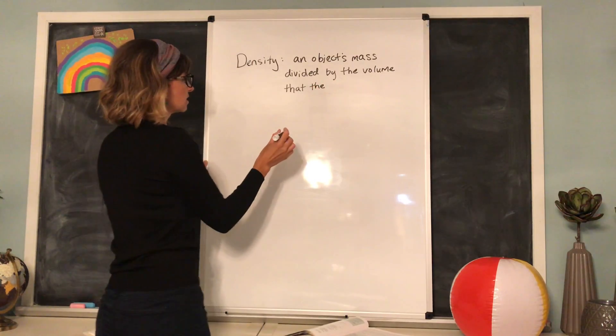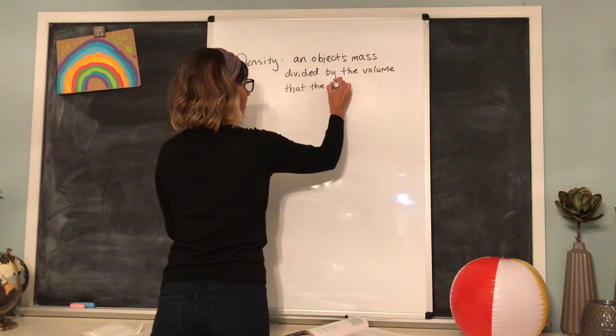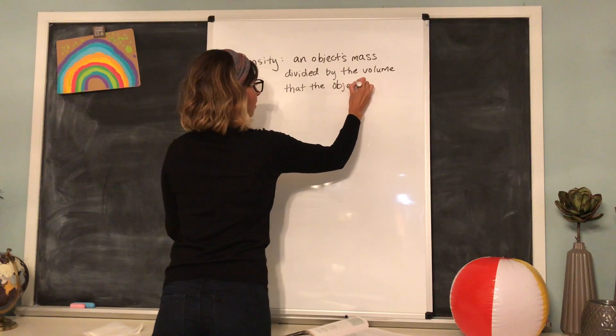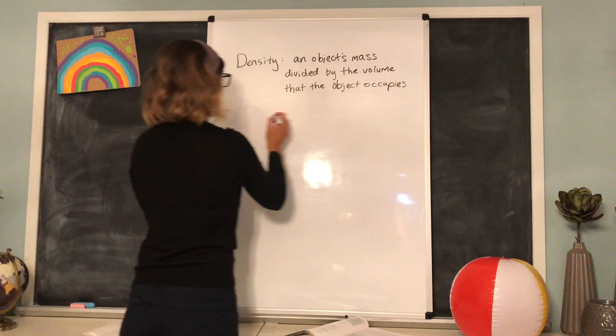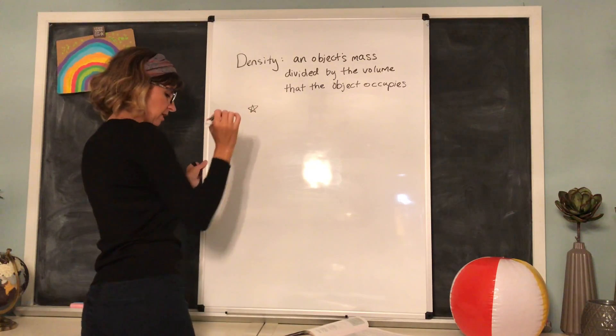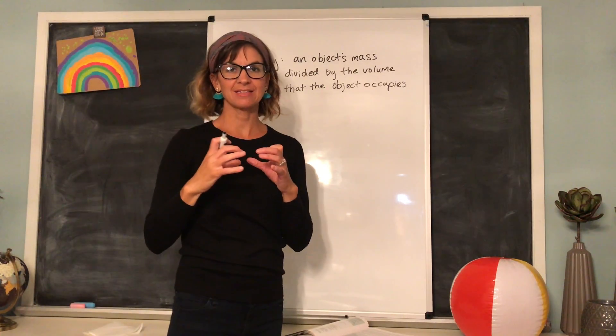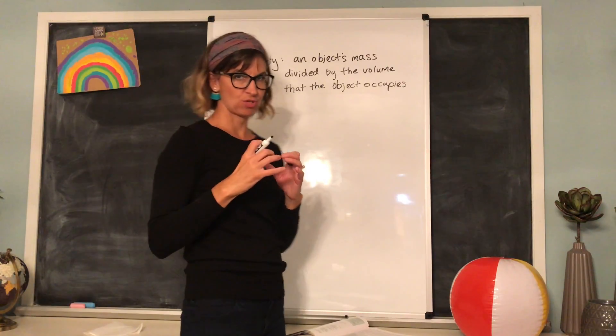Density is an object's mass divided by the volume that the object occupies. In other words, density tells you how tightly packed the matter is in an object.